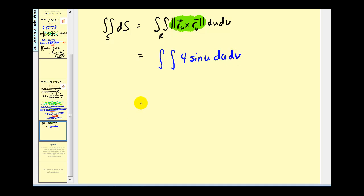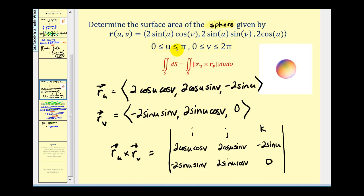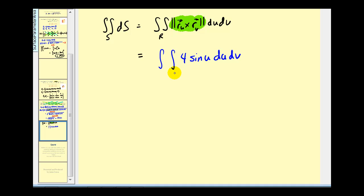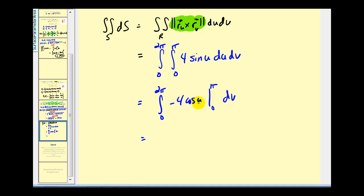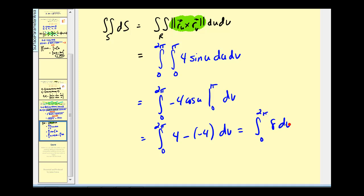The magnitude of the cross product came out to four sine u. The intervals were u from zero to pi and v from zero to two pi. Integrating four sine u with respect to u gives negative four cosine u. Evaluating from zero to pi: cosine pi equals negative one giving four, minus cosine zero equals one giving negative four, so we get eight. Integrating eight with respect to v from zero to two pi gives eight v, evaluated to 16 pi. So the surface area of the sphere is 16 pi. Thank you for watching.